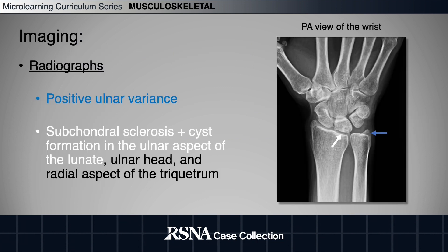The classic imaging findings on the PA radiograph of the wrist include a positive ulnar variance, which is when the articular surface of the ulna is distal to the articular surface of the radius, and subchondral sclerosis and cystic change along the ulnar aspect of the lunate. Sometimes these changes can also be present in the radial aspect of the triquetrum and ulnar head.